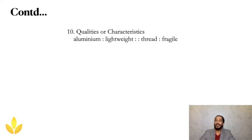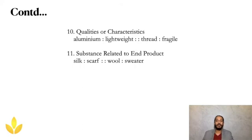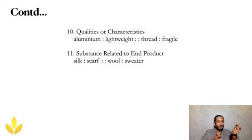Substance related to end product. Nobody would want a scarf made out of polyester — a scarf is usually made with silk. Similarly, a sweater is best when made out of wool, which keeps you warm for a really long time. Always understand we are comparing the substance to its end product: silk is a substance and the end product is a scarf; wool is a substance and its end product is a sweater.